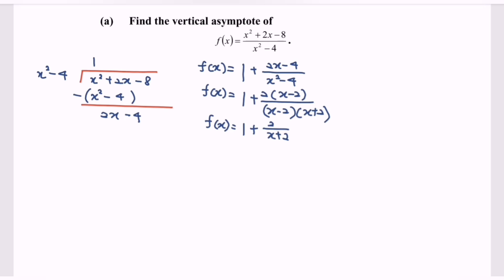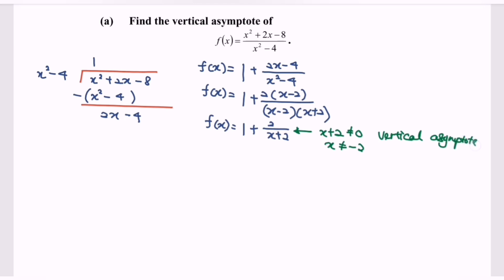Kindly focus on the situation. If we refer to the function f, notice that we have the denominator x + 2. As we all know, x + 2 cannot be equal to 0 because the situation becomes undefined. So here, x cannot be equal to -2. Therefore, the vertical asymptote is x = -2.